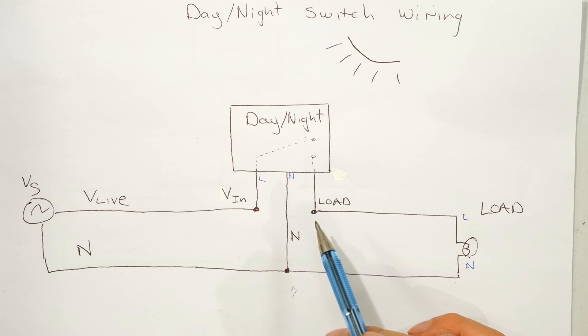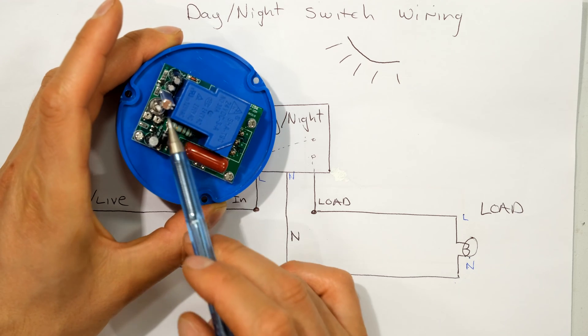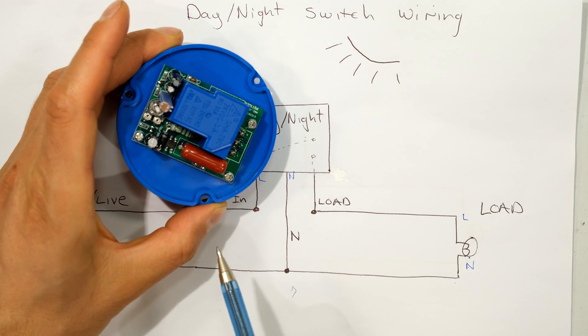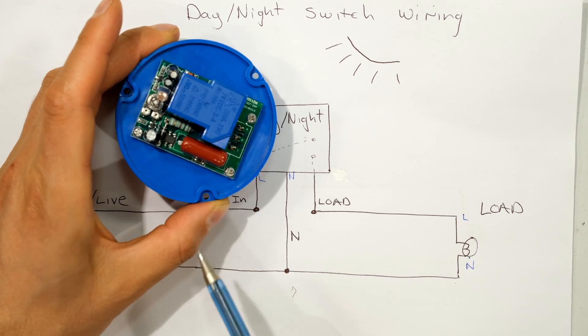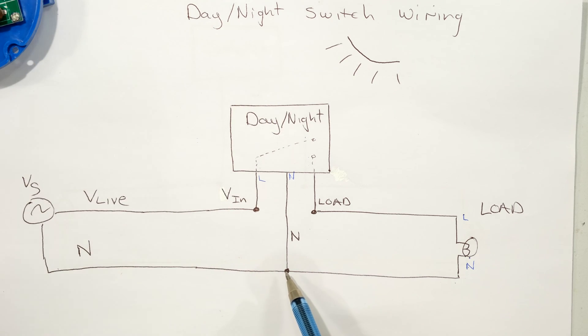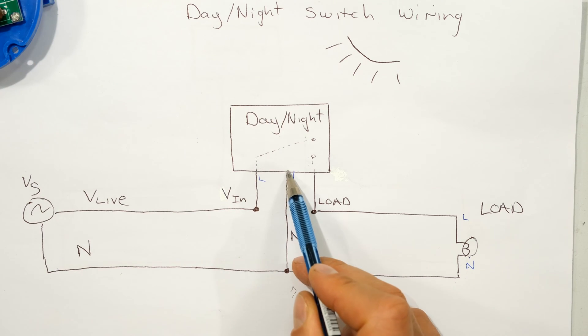But because the day-night switch has an electronic circuit, the electronics also need current and voltage to operate, so it needs a supply. That is why the day-night switch also requires a neutral wire.